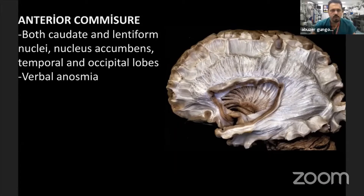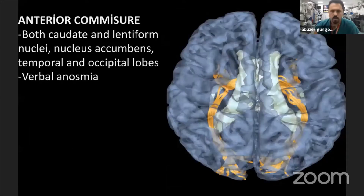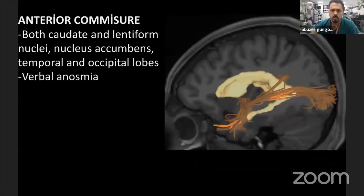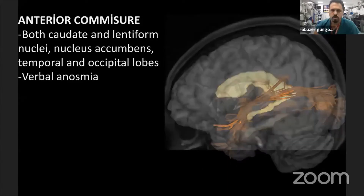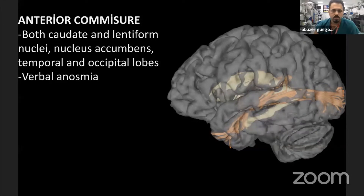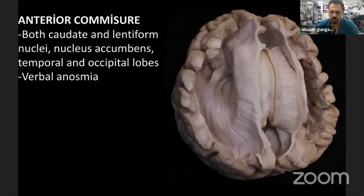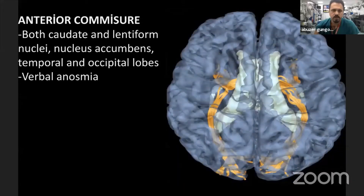The anterior commissure becomes visible when you remove the IFOF. You can see the tractography of the anterior commissure and its cortical structure relationships. From the superior view, you can see the anterior commissure and its temporal and occipital extensions, as well as its cortical relationships.